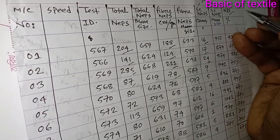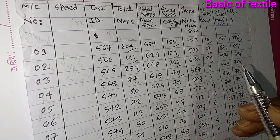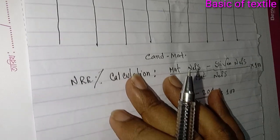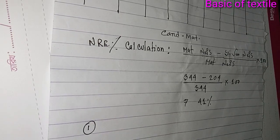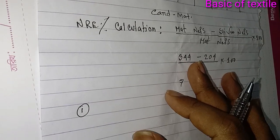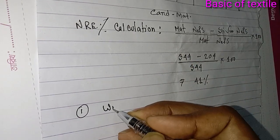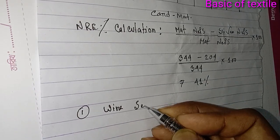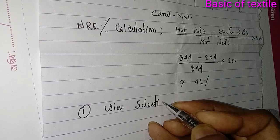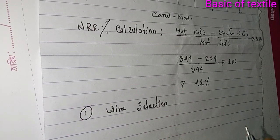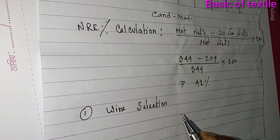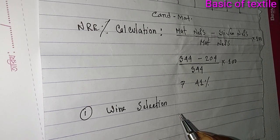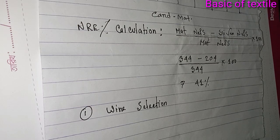NRE neps removal efficiency. NRE why it is important? Number one is if your ware selection is not proper in carding, the ore selection, if it's not done in the correct way, then the NRE will be high. If the ore is bad in the selection, then neps will be more. NRE will be less then.